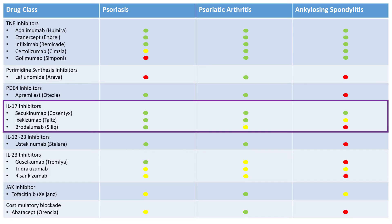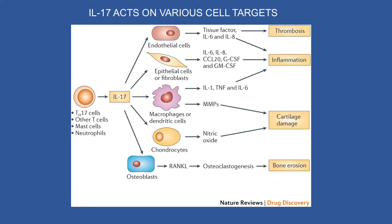Now moving on to what is really new — IL-17 inhibitors, which we're all getting more comfortable with. IL-17 acts on various targets, and depending on the cell type, it differentiates into the multitude of issues we see in this disease: thrombosis, inflammation, cartilage damage, and bony erosions that lead to disability.